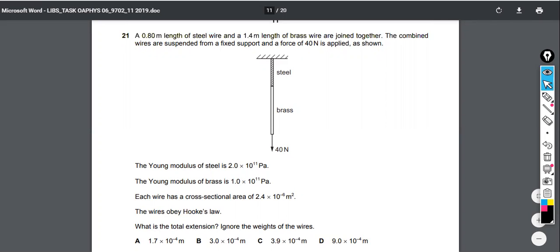We're trying to calculate the total extension, and we don't have to consider like, well, this brass has weight, and it's going to stretch the steel too. They're saying ignore the weight of the wires. Just the only force is the 40 Newton force. They're saying you have permission to just consider that force alone, not the weight of these things.